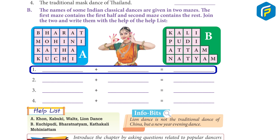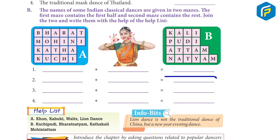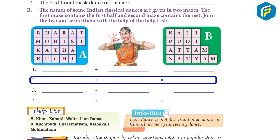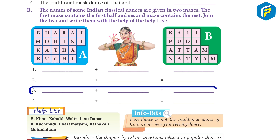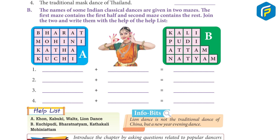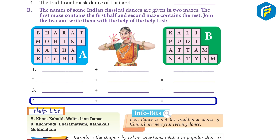1. Bharat + Natyam = Bharatnatyam. 2. Mohini + Attam = Mohini Attam. 3. Kathak + Kali = Kathakali. 4. Kuchi + Pudi = Kuchipudi.